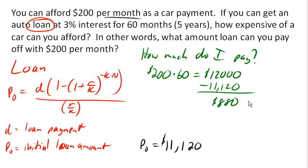Which means $880 of this loan is interest. In other words, over the five years I'm paying $880 to the loan company for their service — for them offering me this credit.